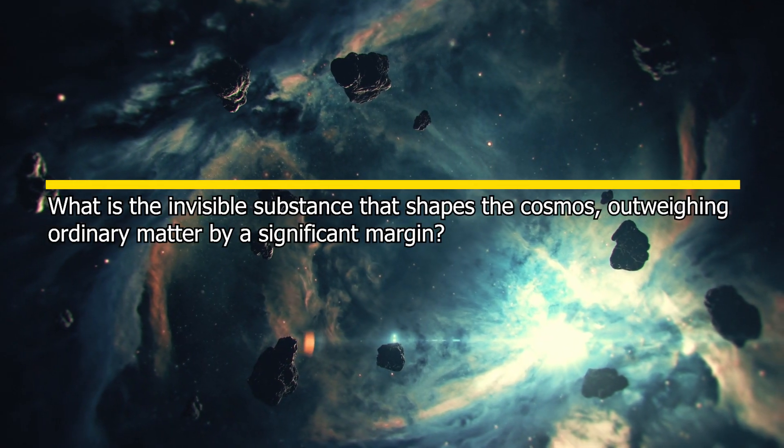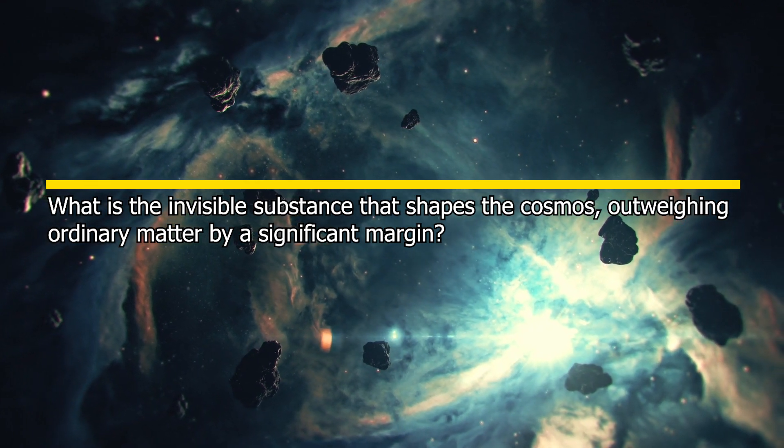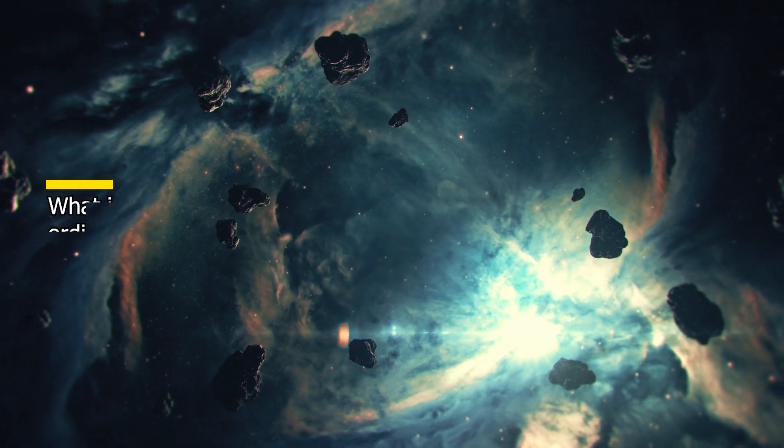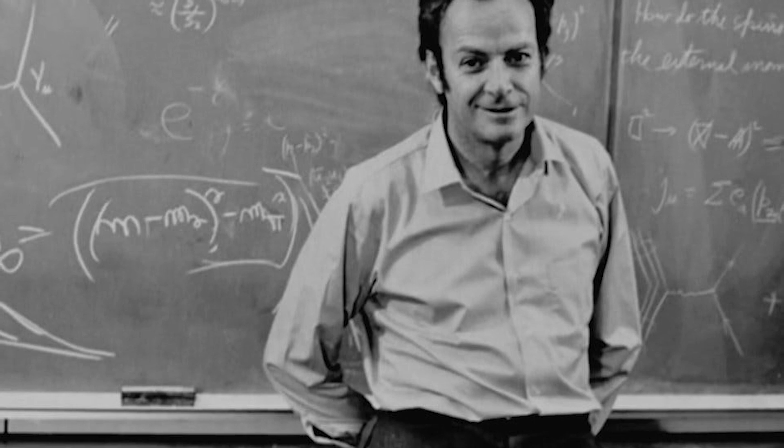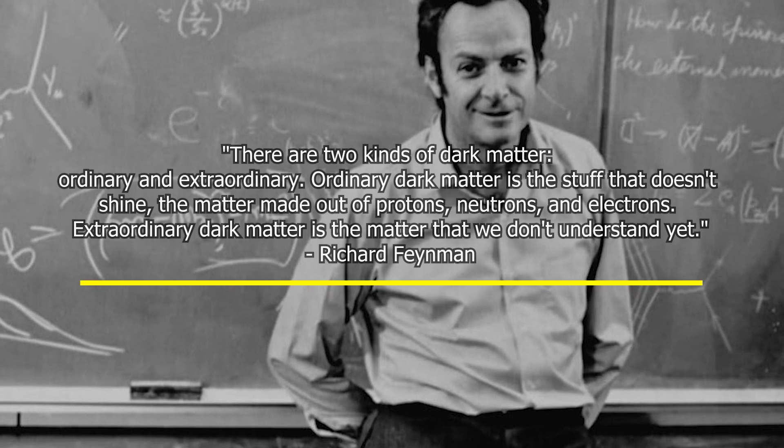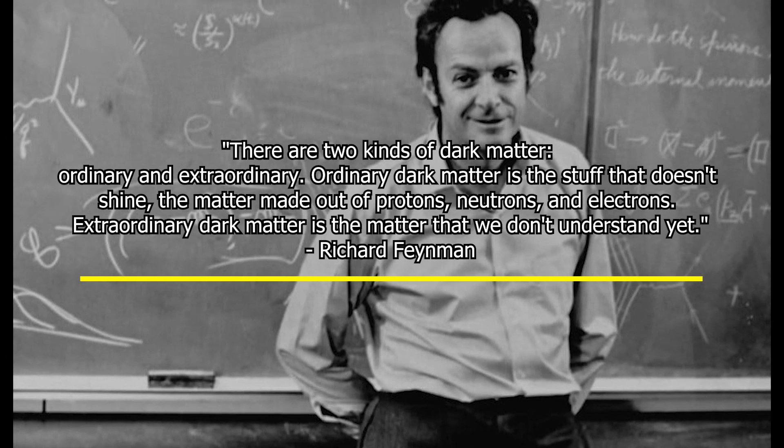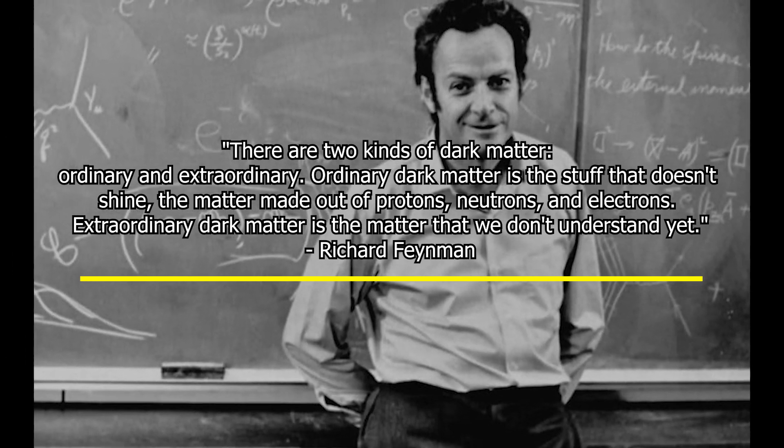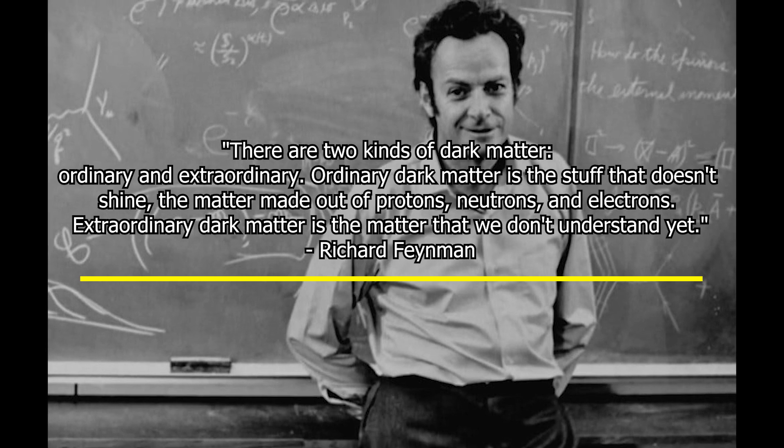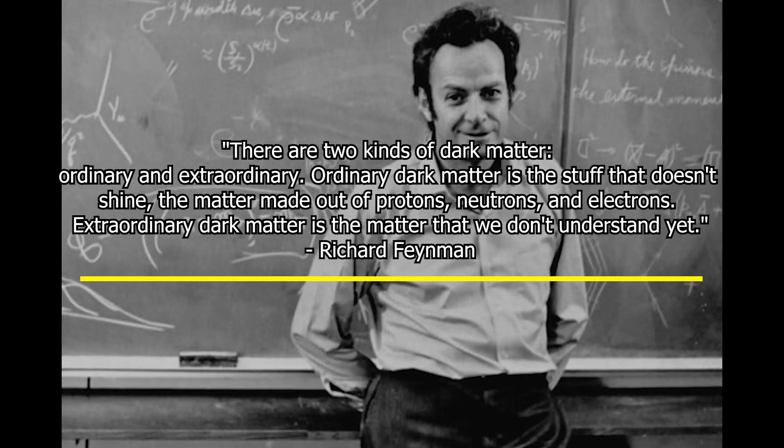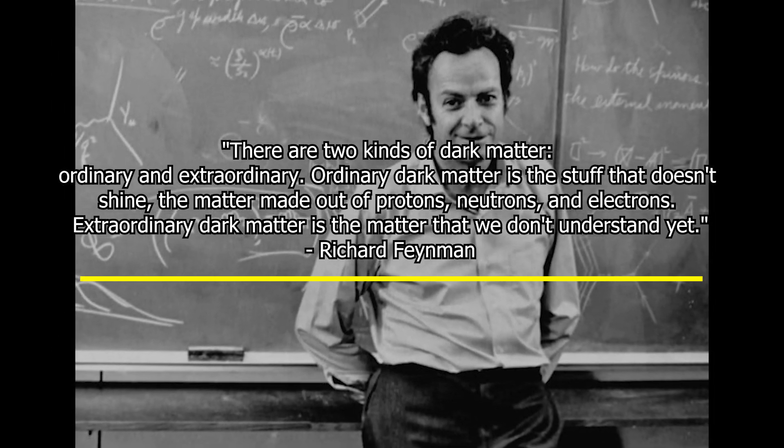What is the invisible substance that shapes the cosmos, outweighing ordinary matter by a significant margin? Famous physicist Richard Feynman once said, there are two kinds of dark matter, ordinary and extraordinary. Ordinary dark matter is the stuff that doesn't shine, the matter made out of protons, neutrons, and electrons. Extraordinary dark matter is the matter that we don't understand yet.